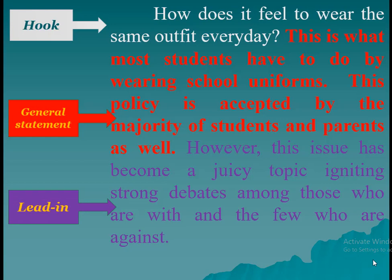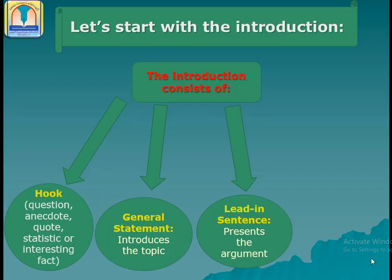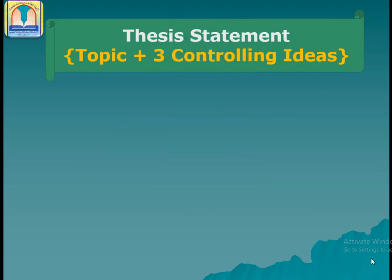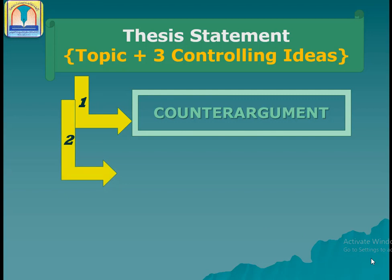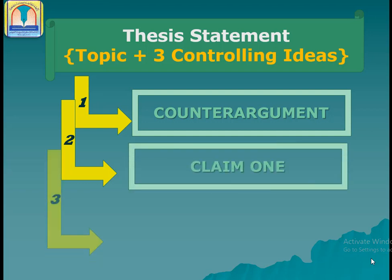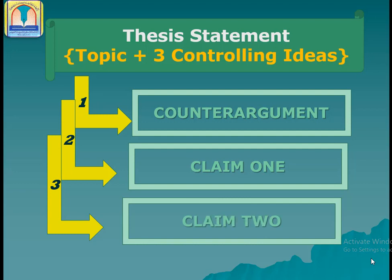However, this issue has become a juicy topic igniting strong debates among those who are with and the few who are against. Then comes the thesis statement. The thesis statement, as usual, includes the topic and three controlling ideas. The first of the three controlling ideas introduces the counter-argument or opposing view that will be refuted in the final body paragraph, while the remaining two reflect your claim without using any first-person pronouns or expressions like 'I think' or 'I believe.'